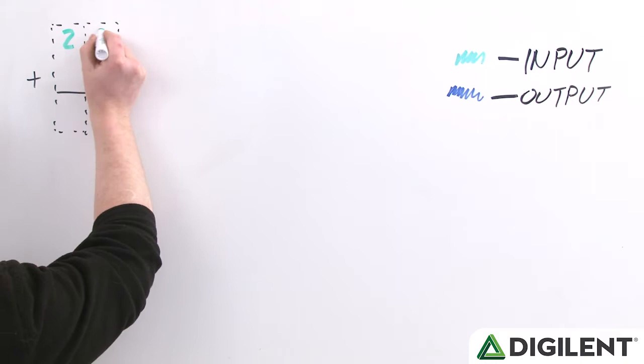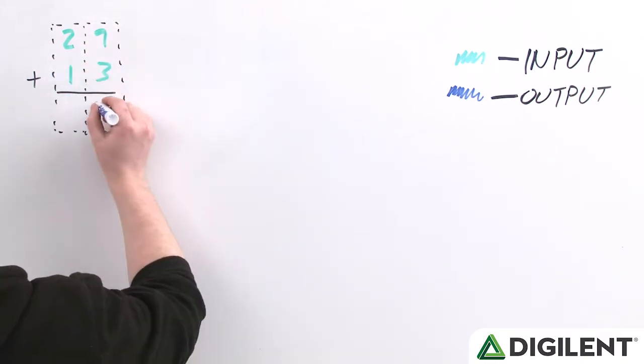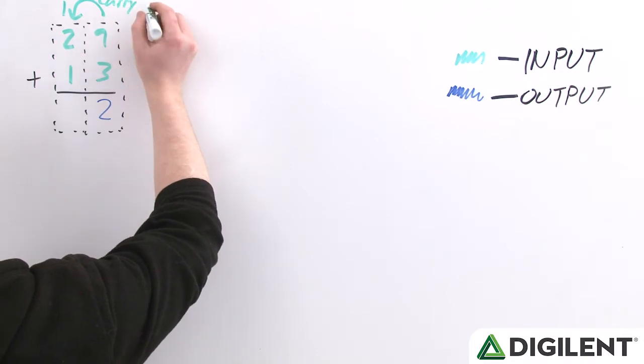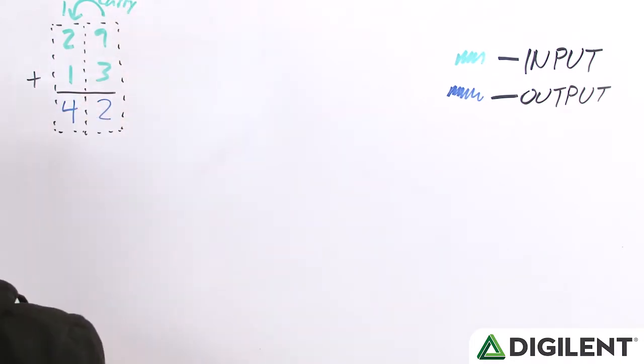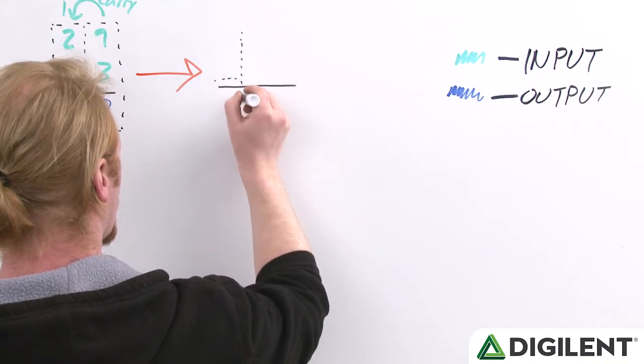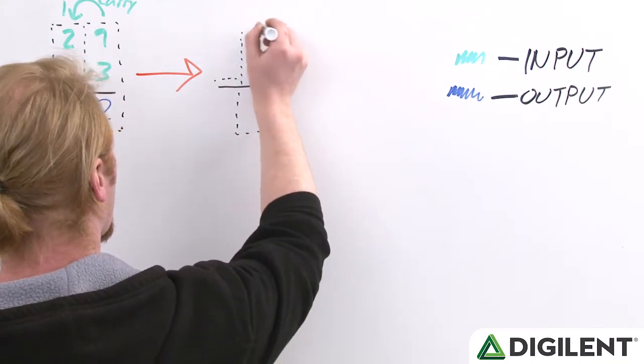The logic behind the circuit is exactly the same as what you're familiar with from learning addition in elementary school. Here we have two input numbers, and each respective place value is added together to get the place value for the result. If you go over your maximum value, 9 for normal base 10 numbers or 1 in binary, then you can have a carry over number or carry out bit.